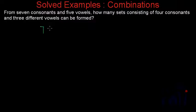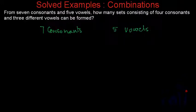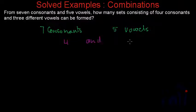So what do we have? We have seven consonants and we have five vowels. We have to select four consonants out of these seven consonants, and we have to select three different vowels out of these five vowels and put them into a set. We have to find the number of sets we can make by doing so.